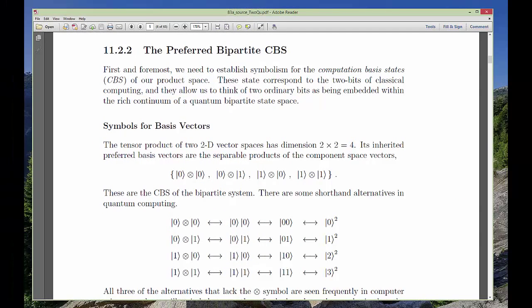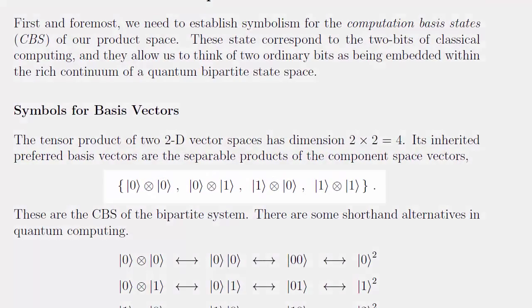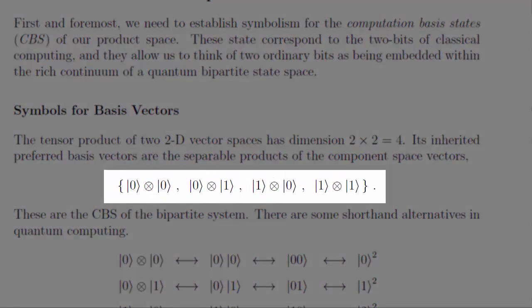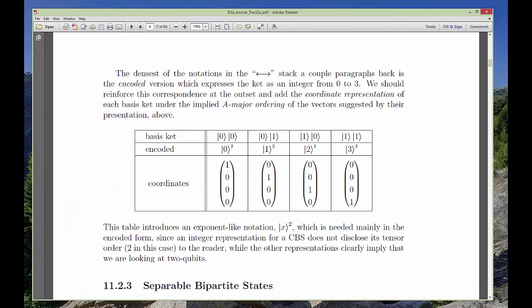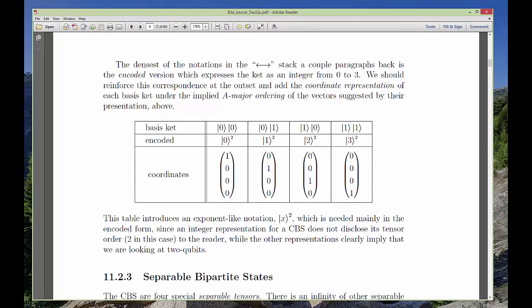Everything falls into place exactly as predicted. The new, four-dimensional preferred basis consists of the four separable products of the two component z-bases. And we introduce some very useful alternate terminology for those four vectors.